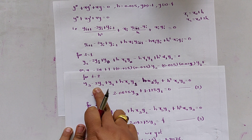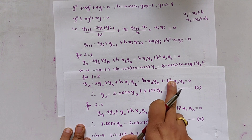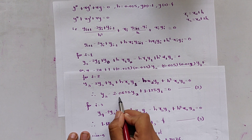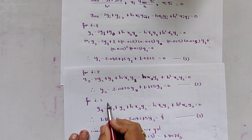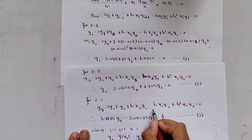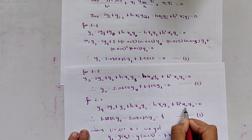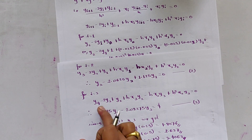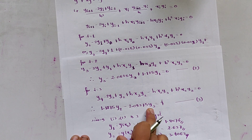Taking i = 2, substituting h and x_2 = 0.05, we get equation 2: y_3 - 2.0625·y_2 + 1.125·y_1 = 0. Taking i = 3 and substituting h and x_3 = 0.075, we get equation 3: 1.1875·y_2 - 2.09375·y_3 + y_4 = 0.